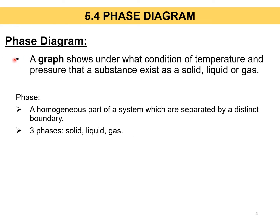Apa tu phase diagram? A phase diagram is basically a graph that shows the conditions of temperature and pressure at which a substance can exist as a solid, liquid, or gas. A phase is a homogeneous part of a system which is separated by a distinct boundary. We have three phases in a phase diagram: solid, liquid, and gas.